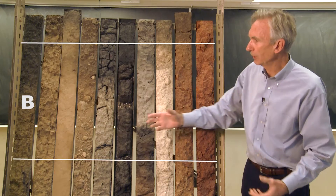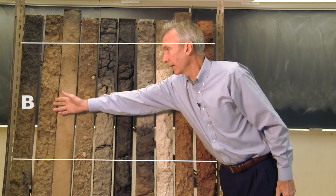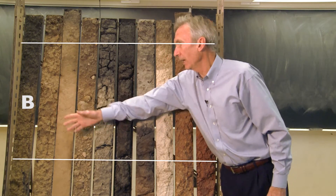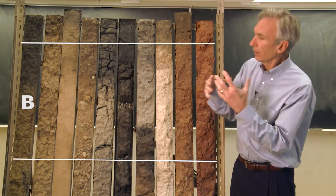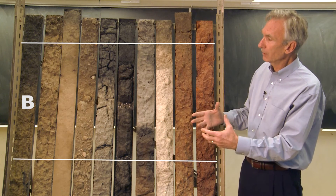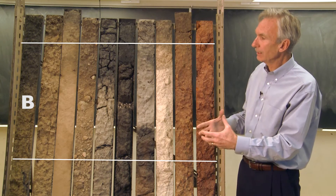So over here we have nice B horizons. Essentially the B horizon has a higher clay content.